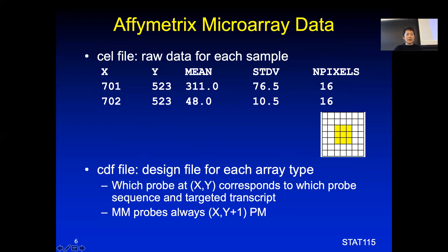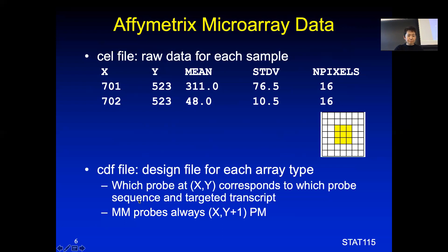The second data type is the CDF file. This is only one file used for each array type. If you buy a human array or a mouse array, it will come with a different CDF file. It just tells you at which X and Y location a particular probe sequence is located and which gene it's targeting. A probe set is basically a group of probes that target the same gene.